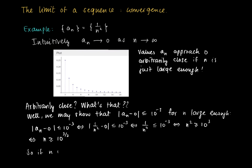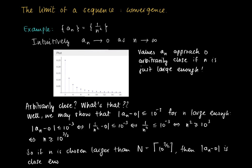So if we take n larger than the square root of 1000, we know that |a_n - 0| is smaller than 10^(-3). If we look at the index number N — indicated as capital N — then for all n > N, a_n is close enough to zero, given that 10^(-3) is the desired accuracy.